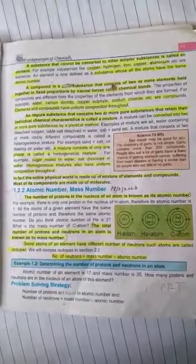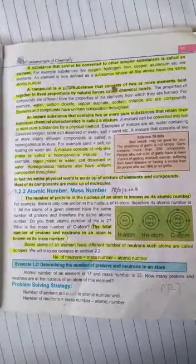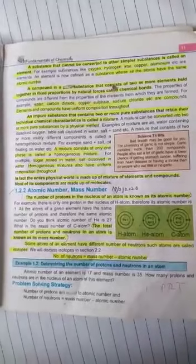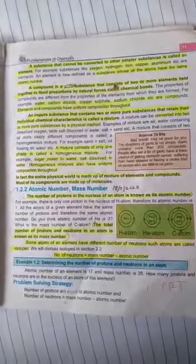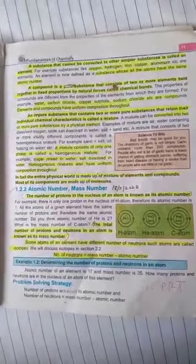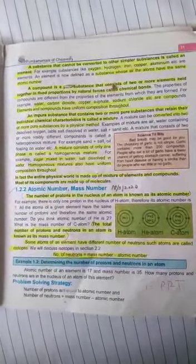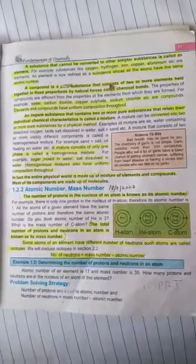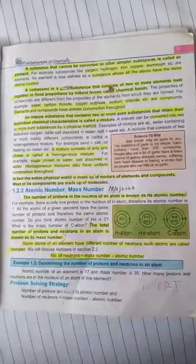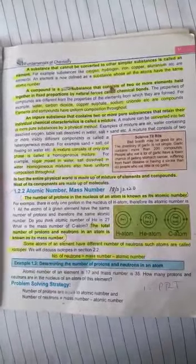Mass number minus atomic number, we will get the neutron number.